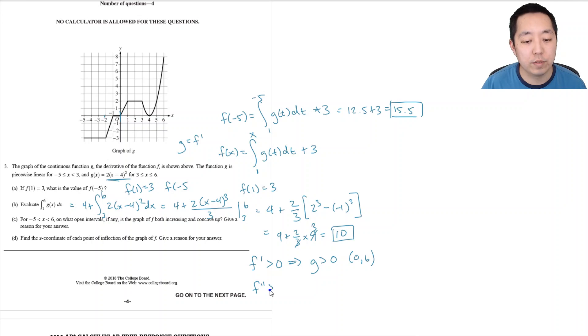Concave up is the second derivative is greater than 0, that implies g prime is greater than 0, so that's when it's increasing, the slopes are positive. Well, that happens between negative 2 to negative 1, then 0 to 1, then 4 to 6.